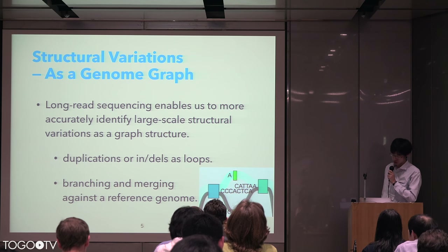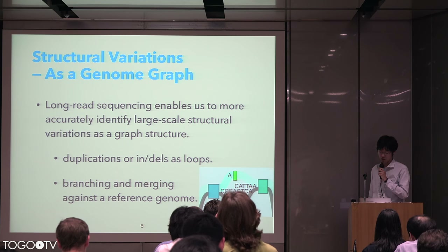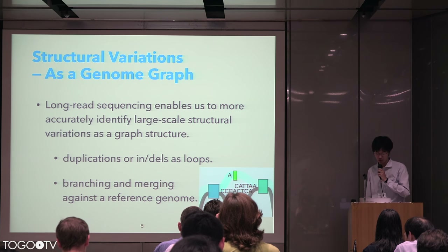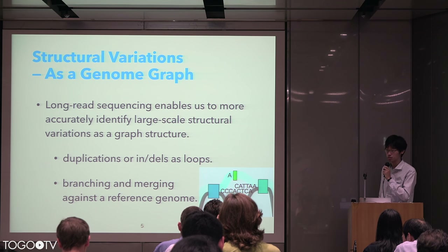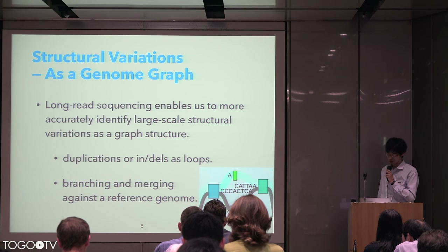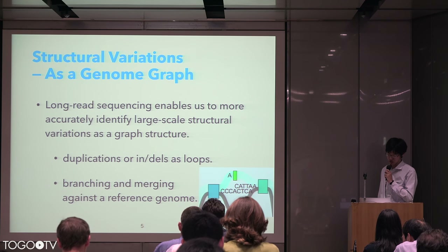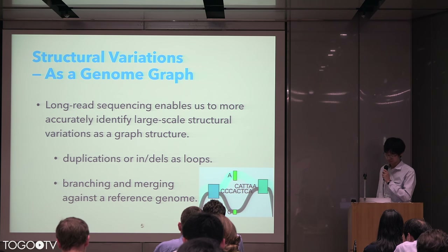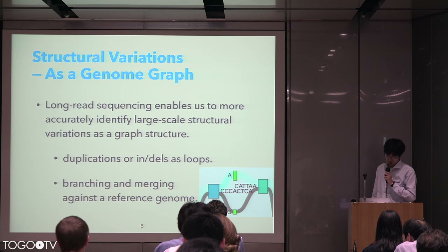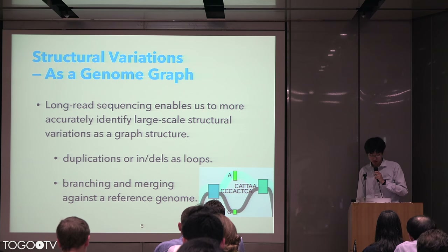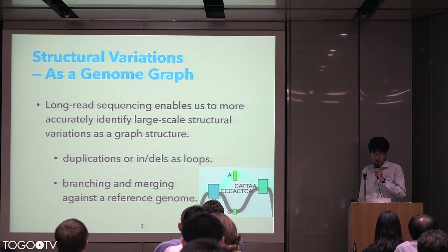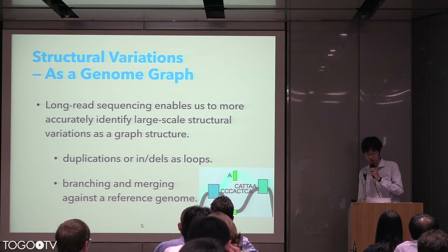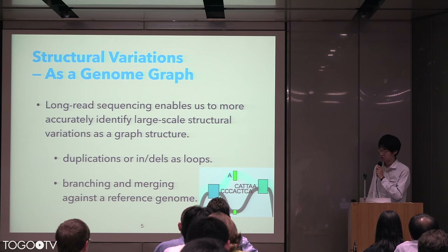For example, duplications or indels can be regarded as loops. And branching and merging against a reference genome are also graph representations, as shown in this figure. Such variations are detected by mapping long reads or comparing assembled sequences to a reference genome.